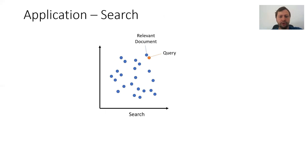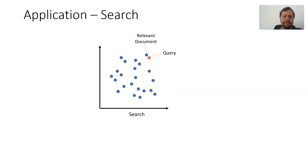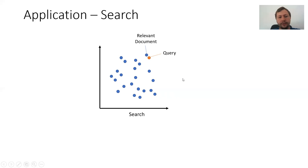Another big application is search. You encode all your documents, sentences, paragraphs, or documents in the vector space. Then at search time, the user inputs some query, and you look in the vector space to find the closest document, which hopefully provides the answer to the query. We see quite big improvements with such a dense-based search function compared to traditional lexical-based search functions, because they overcome the lexical gap issue and can also preserve word order.